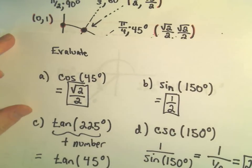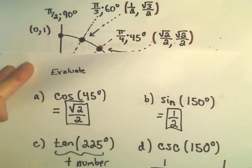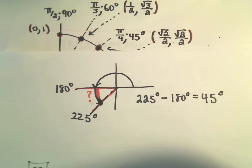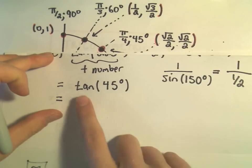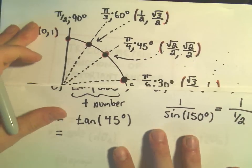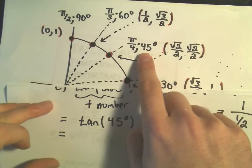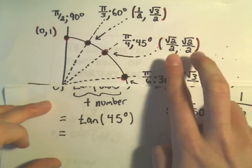Well, recall tangent of 45 degrees is just the ratio of the y-coordinate to the x-coordinate. So tangent of 45 degrees, I do the same thing. I find my angle 45 degrees. There it is. I think, what's the point? It's root 2 over 2 comma root 2 over 2.